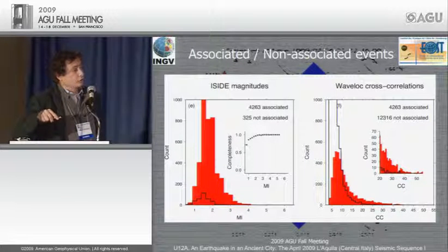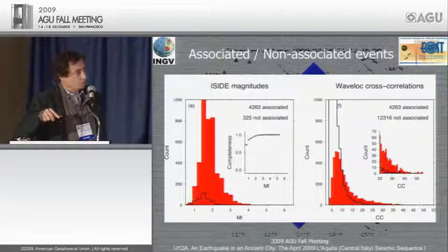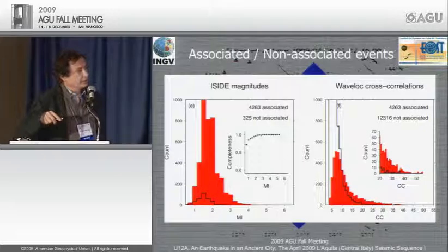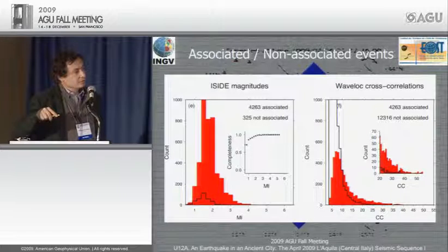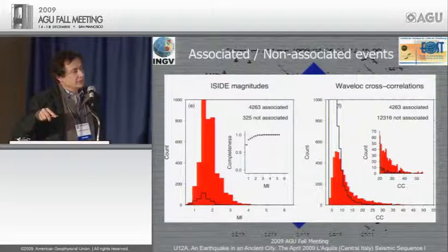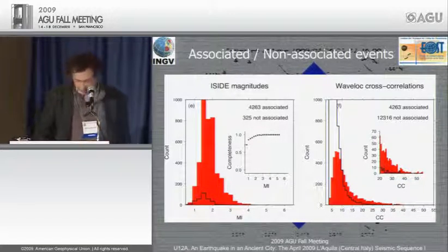The final picture: for magnitudes slightly greater than 2.2, we detect essentially all earthquakes. And as anticipated, there are also events that went undetected by the seismic center that our method was able to detect.